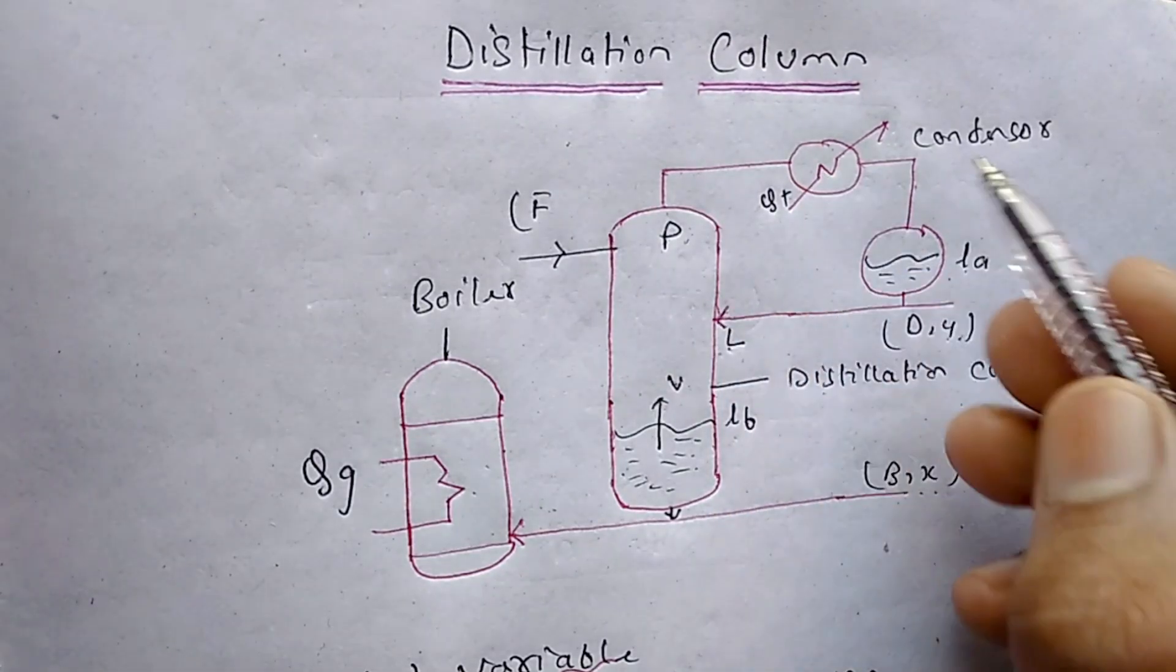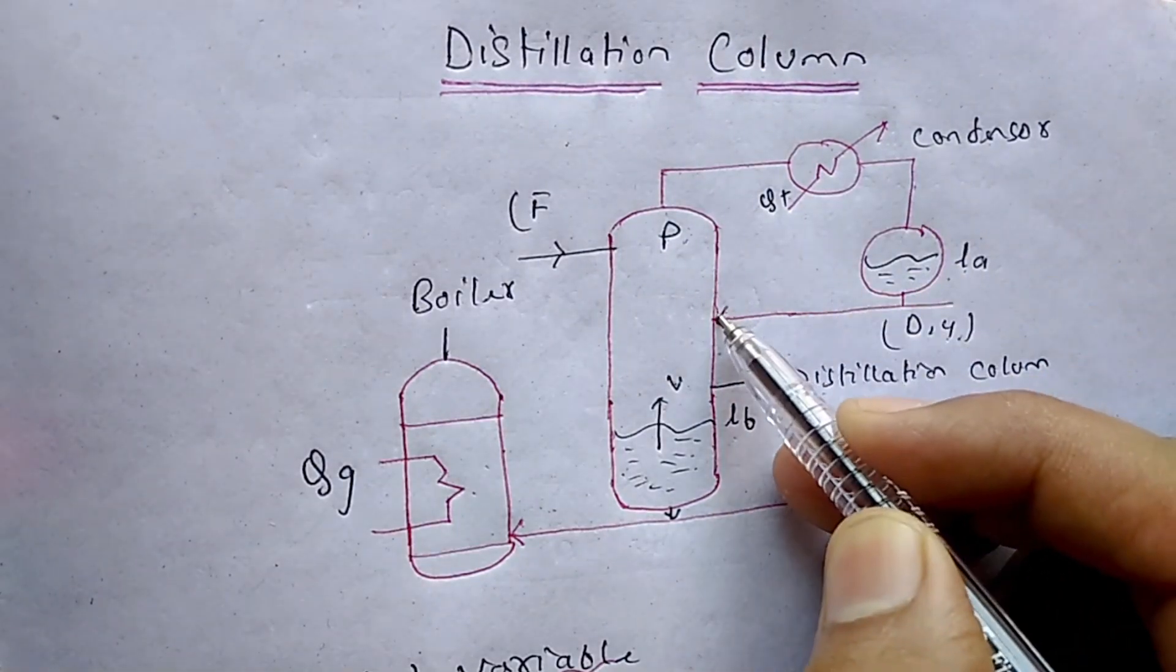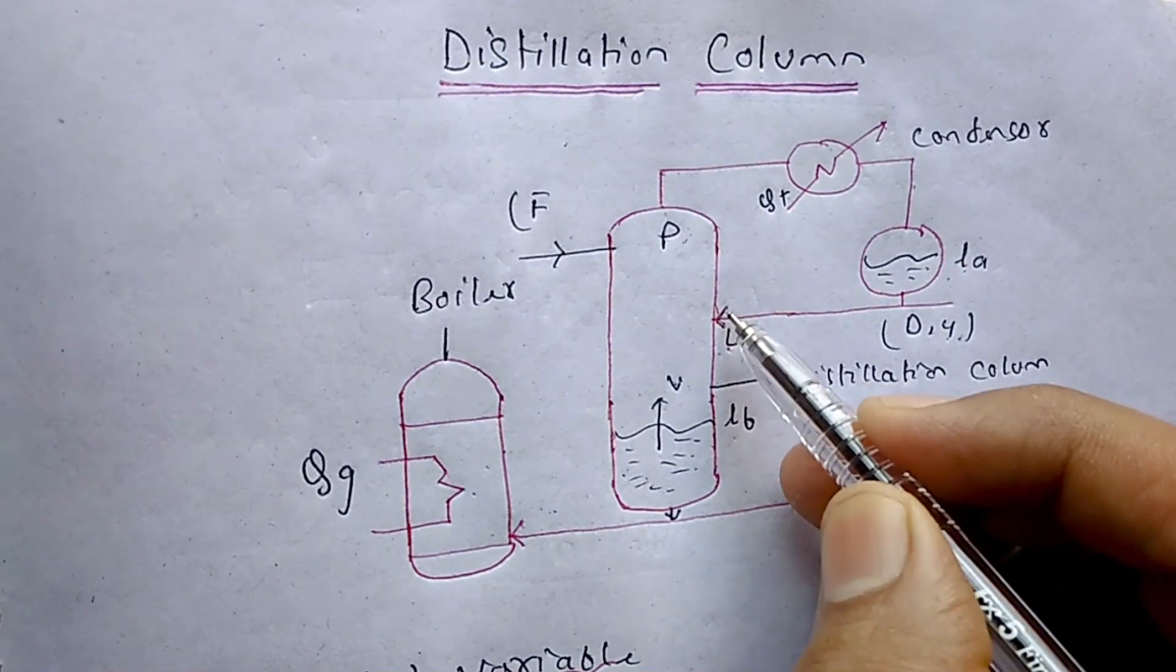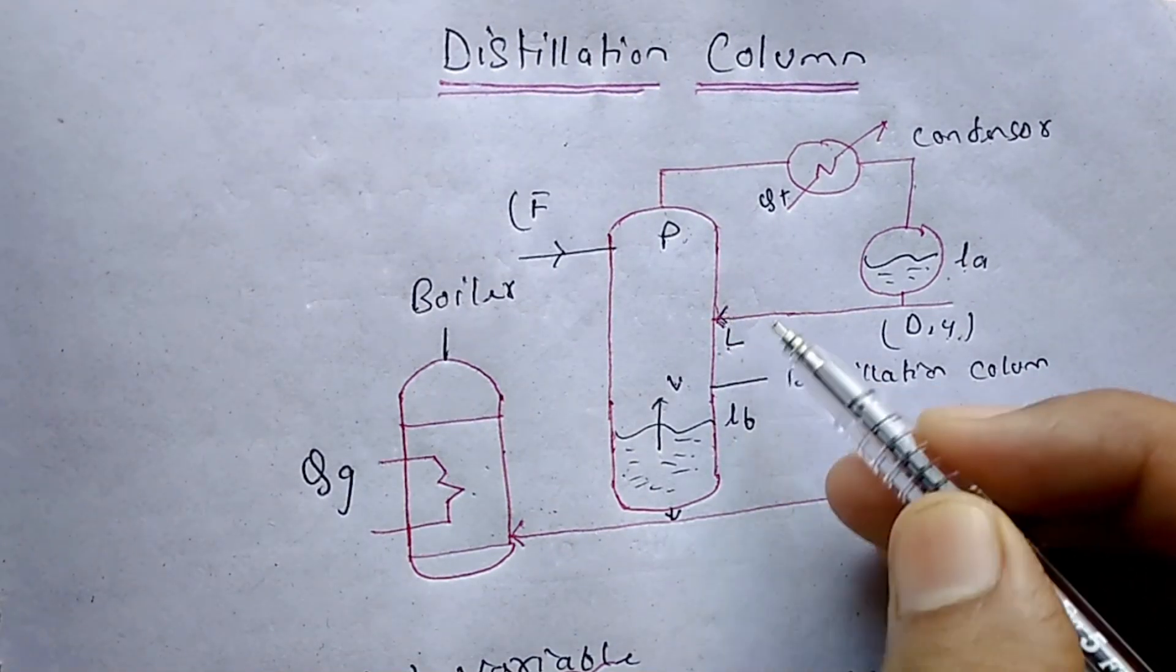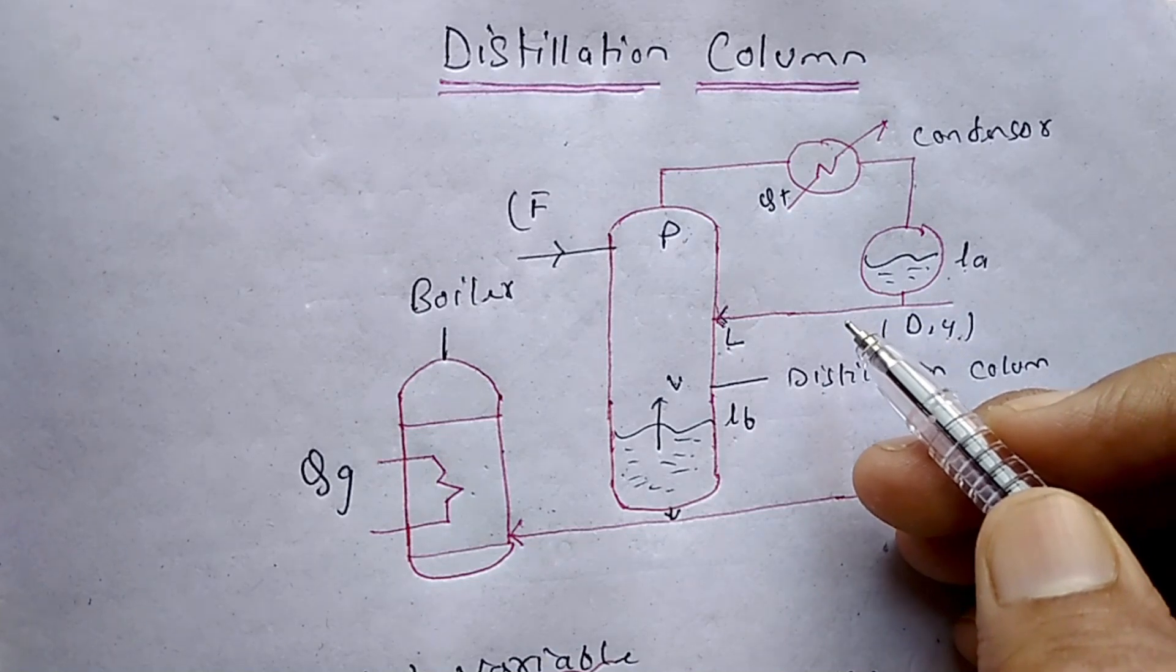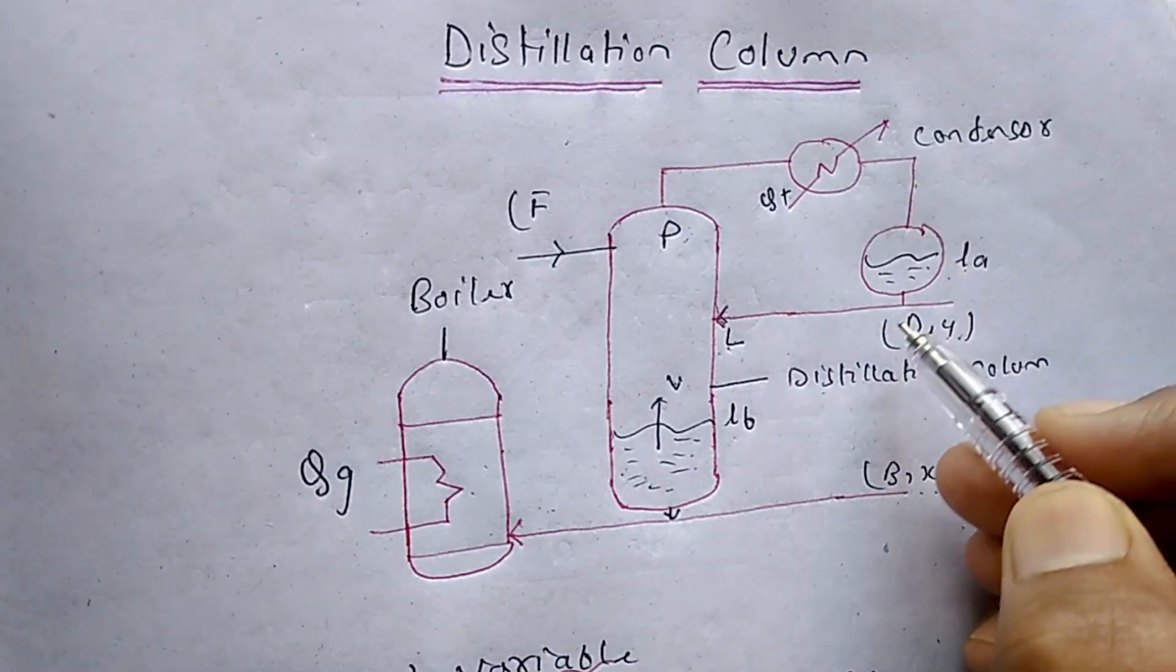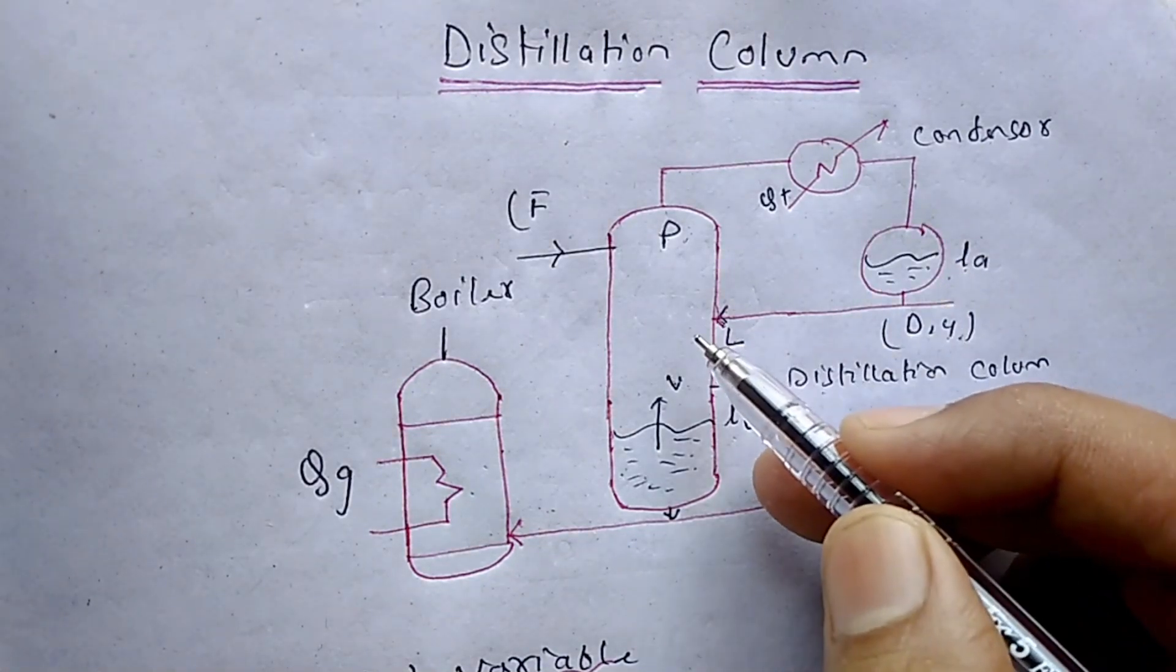Some amount of product is reflected back to the top of the column. So this is the reflux ratio. Reflux ratio indicates amount of product recycled back to the top of the column.